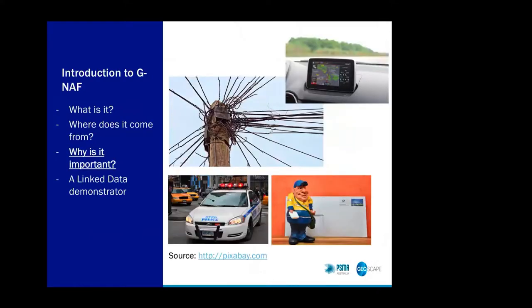Why is it important? Addresses are extensively used in navigation — most of you have probably used it to find a petrol station on the way home. It's commonly used in infrastructure planning, government service delivery including emergency services, although GNAF is not used in the city of New York so the New York PD police picture is probably a little bit misplaced. As well as simple things like getting mail to rural areas, pizza delivery to your door, or even just estimating how long it's going to take before you get your pizza.